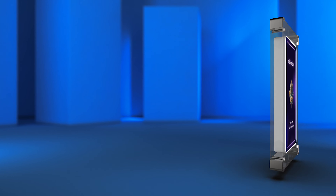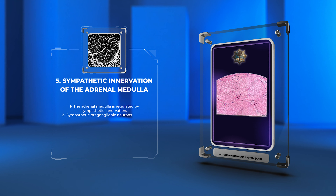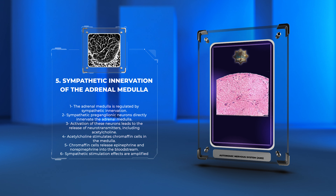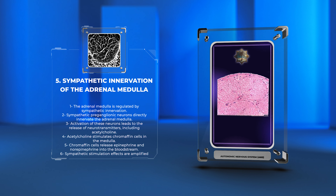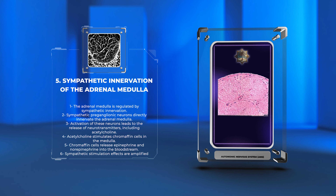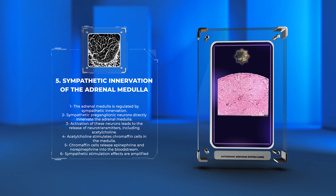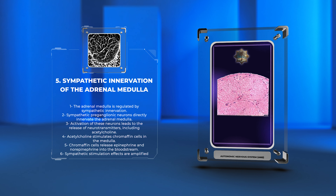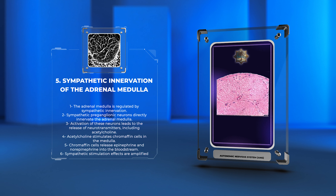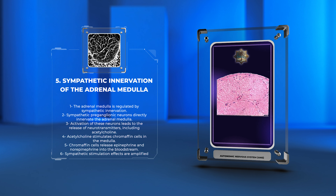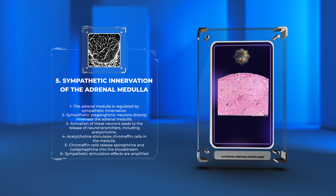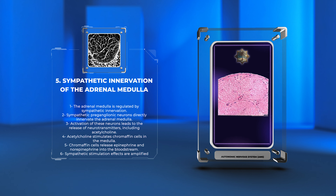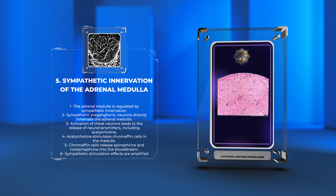The adrenal medulla represents a unique structure regulated by sympathetic innervation. Sympathetic preganglionic neurons directly innervate the adrenal medulla, bypassing the synapse in the sympathetic ganglia. Activation of these neurons leads to the release of neurotransmitters, including acetylcholine, which stimulates chromaffin cells in the medulla. These chromaffin cells release epinephrine and norepinephrine into the bloodstream, amplifying the effects of sympathetic stimulation throughout the body.